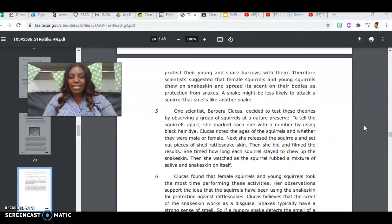One scientist, Barbara Klukas, decided to test these theories by observing a group of squirrels at a natural preserve. To tell the squirrels apart, she marked each one with a number by using black hair dye. Klukas noted the ages of the squirrels and whether they were male or female. Next, she released the squirrels and set out pieces of shed rattlesnake skin. Then she hid and filmed the results.